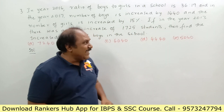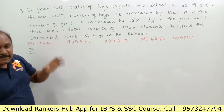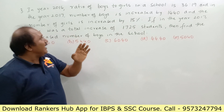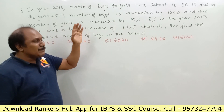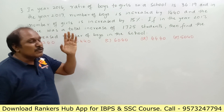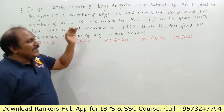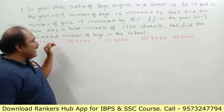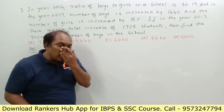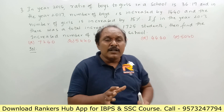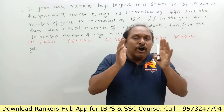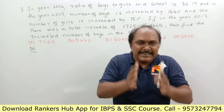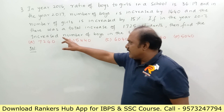Let us see the third question. In the year 2016, the ratio of boys to girls in a school is 36 is to 19. In the year 2017, the number of boys increased by 1440 and the number of girls increased by 15 percent. If in the year 2017 there was a total increase of 1725 students, find the increased number of boys in the school.